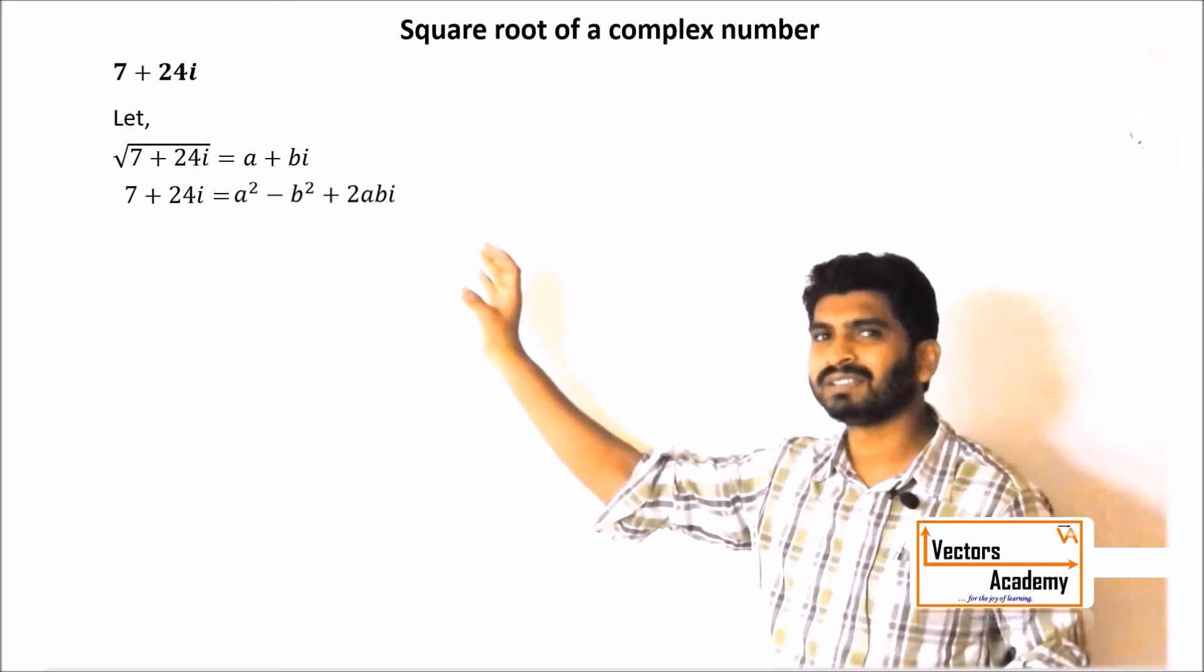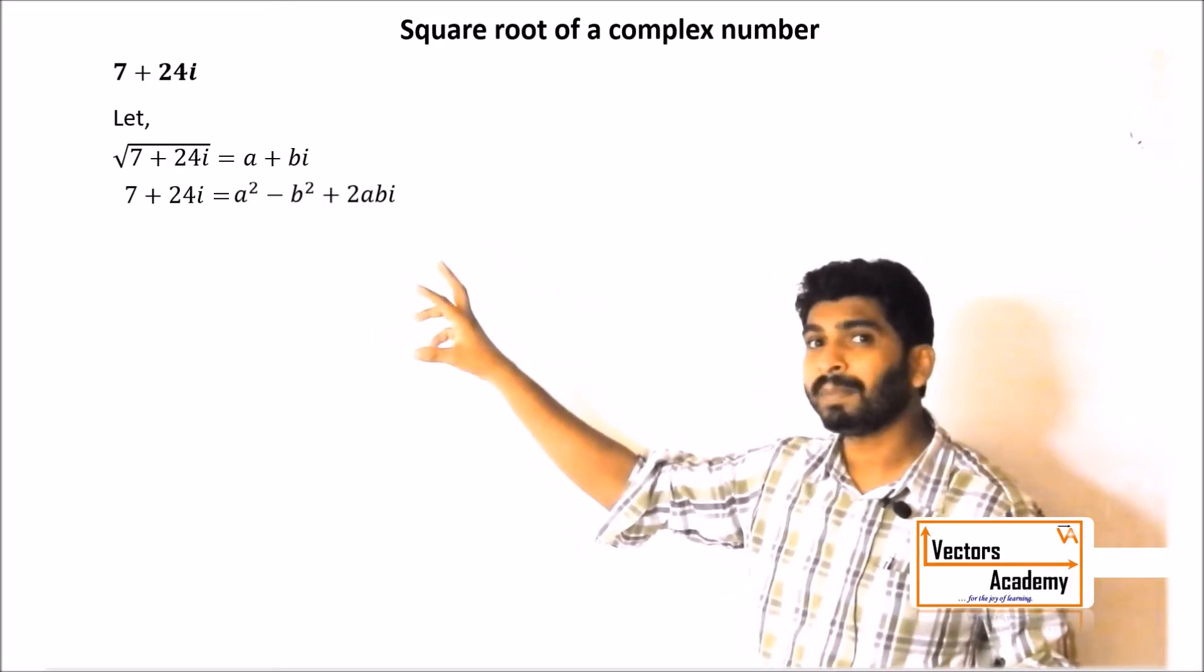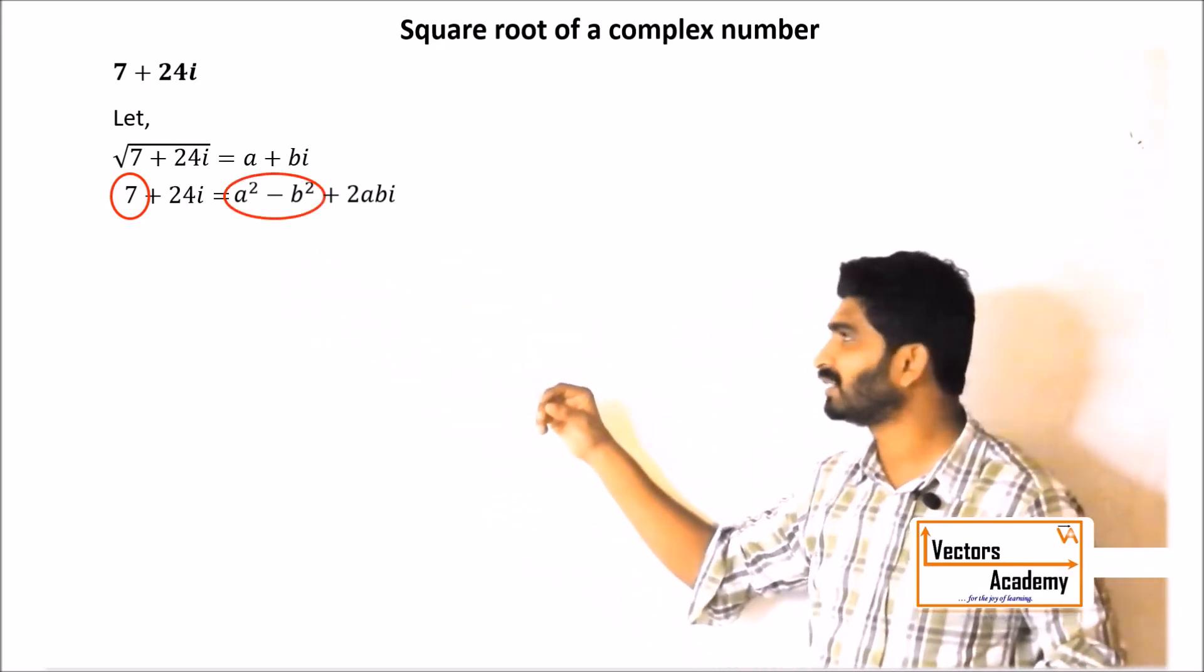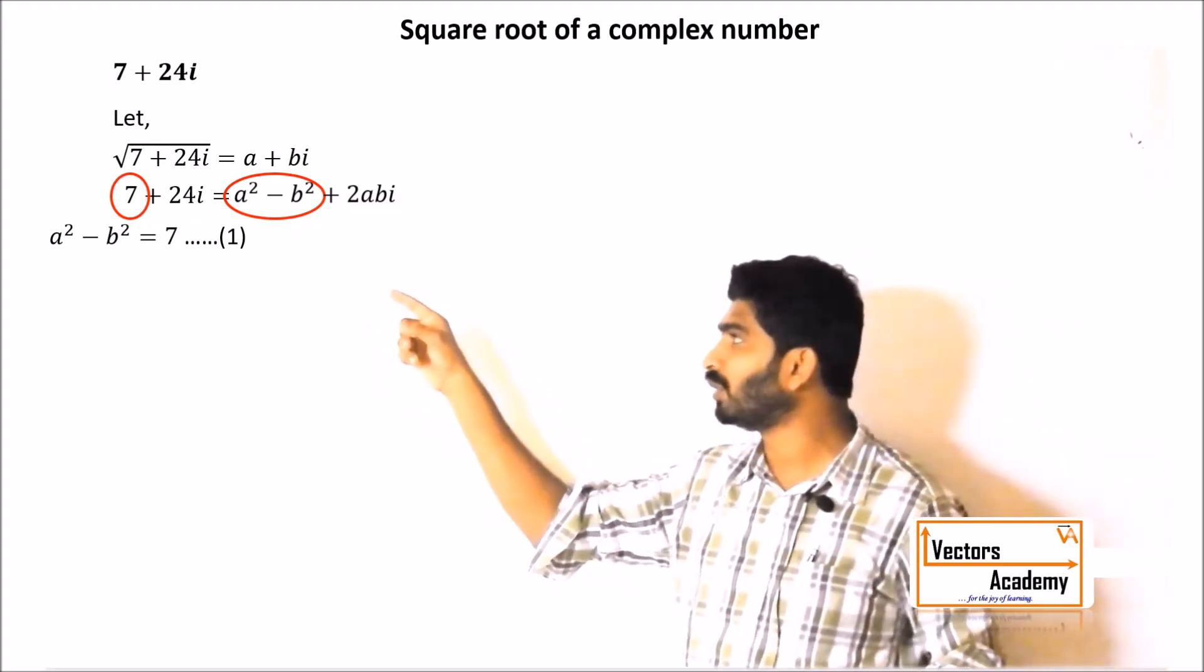Once you split into real and imaginary separately, we can equate the real parts on both the sides, left hand side as well as the right hand side, and the imaginary parts on both sides. So a² minus b² is equal to 7.